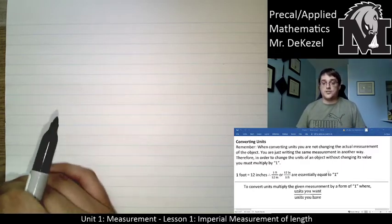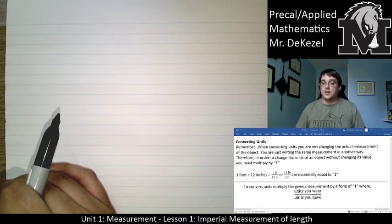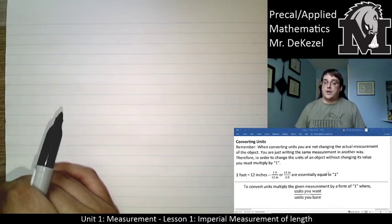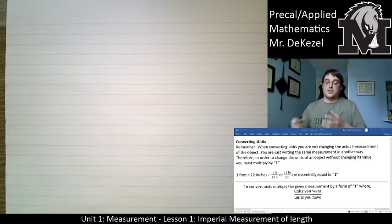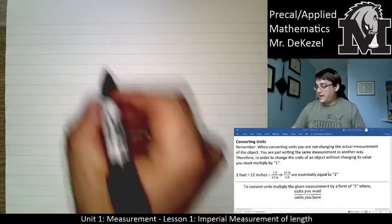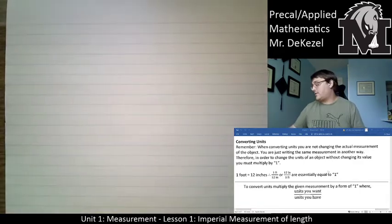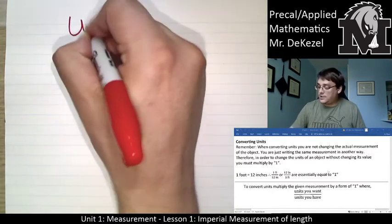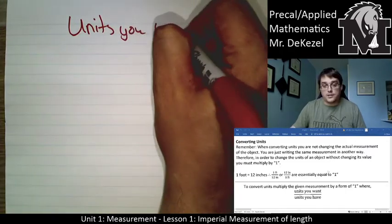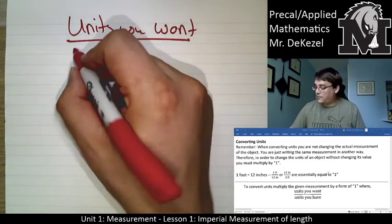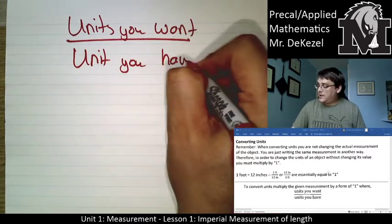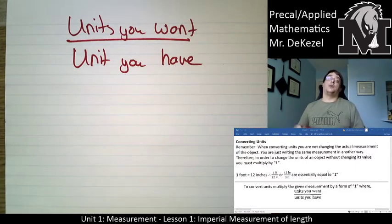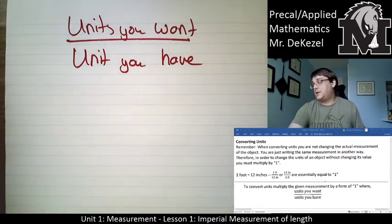To convert units, multiply the given measurement by a form of one where you have the units that you want on top and the units that you have on the bottom. That is the rule — let's put a box around it. Whenever you're converting, make sure you have the units you want over the units you have. These examples will help make more sense of it.